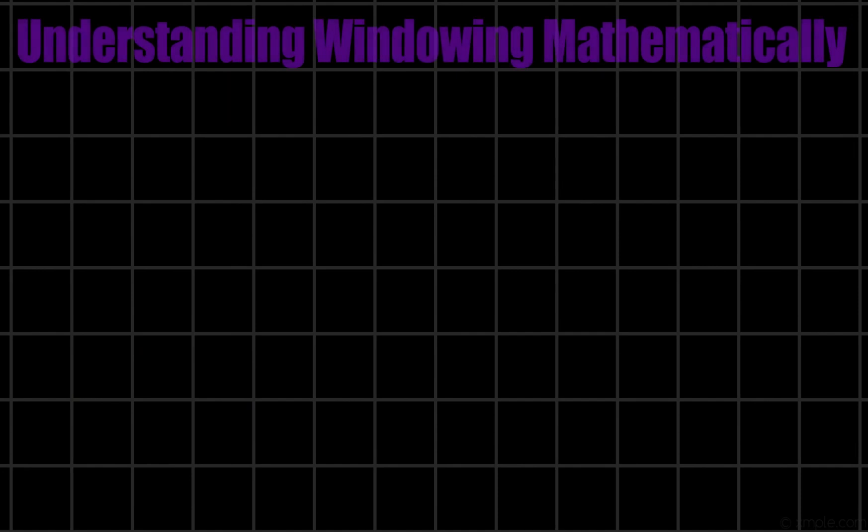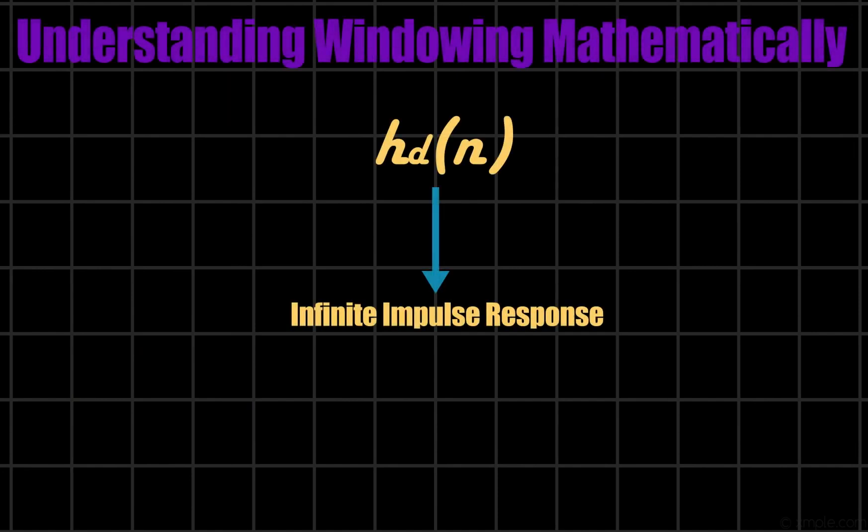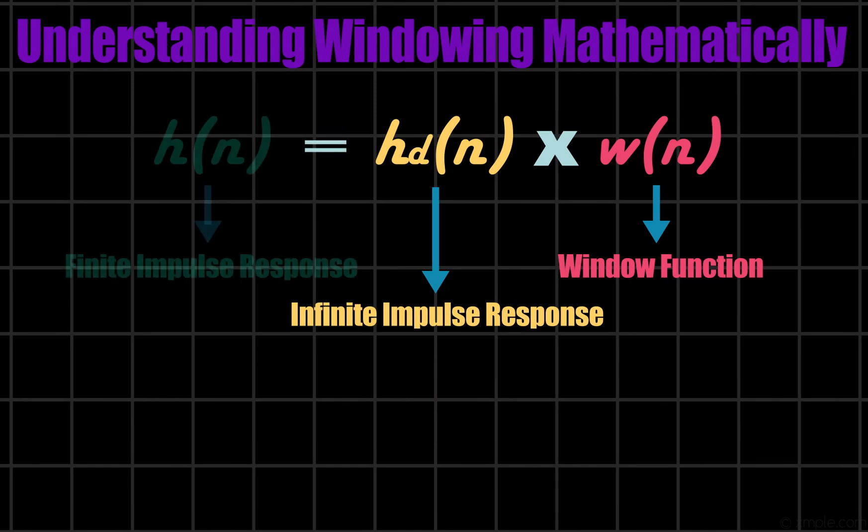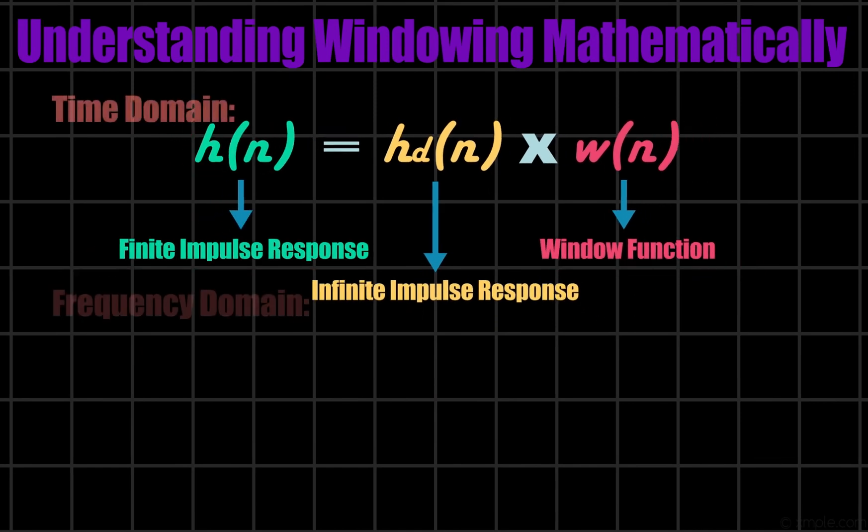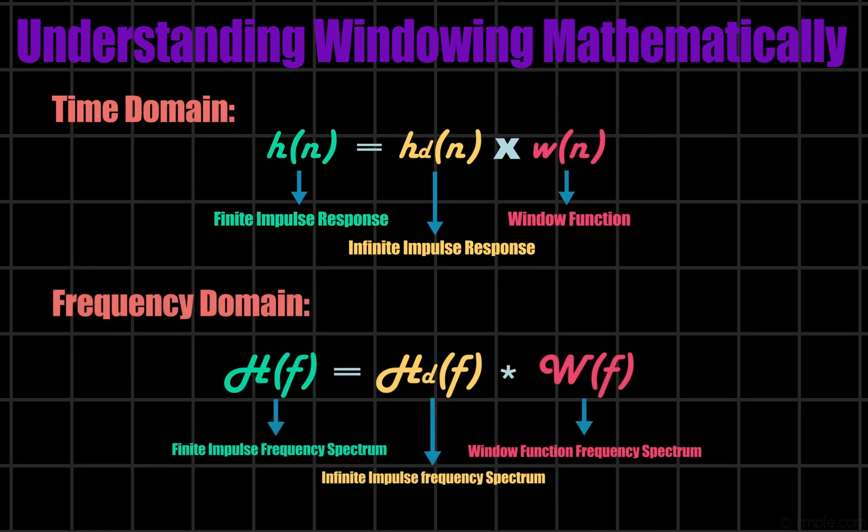Windowing technique can be mathematically obtained by multiplying infinite impulse response with windowing function. This gives the truncated or finite impulse response. As we know, multiplication in time domain results in convolution of two signals in frequency domain.